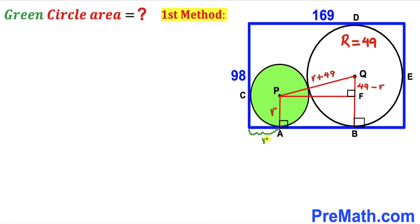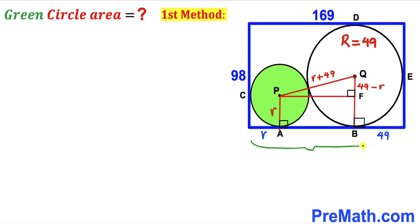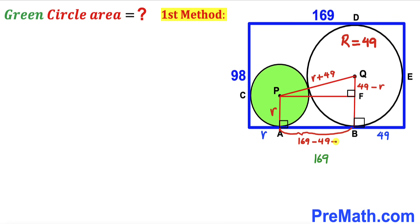The radius of the green circle is lowercase r, and the radius of the larger circle is 49. The whole rectangle length is 169, so the remaining segment AB has length 169 minus 49 minus r, which simplifies to 120 minus r. Since PF is equal to AB, segment PF is also 120 minus r.